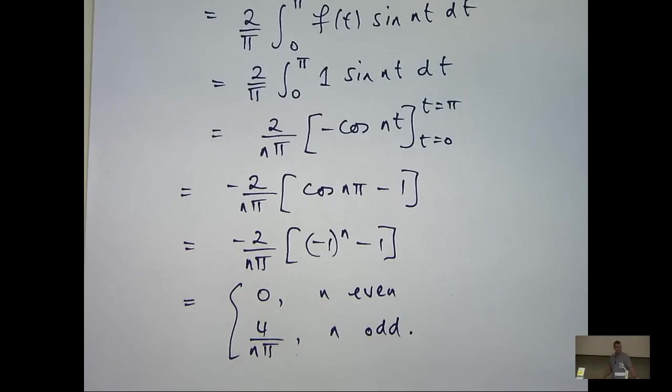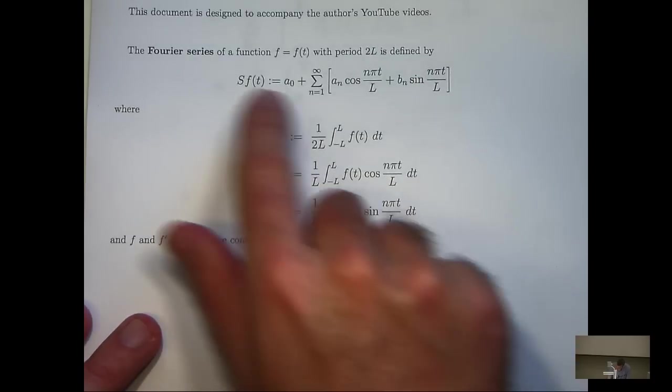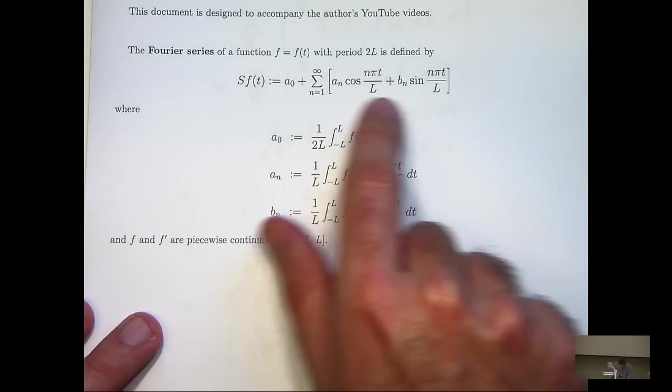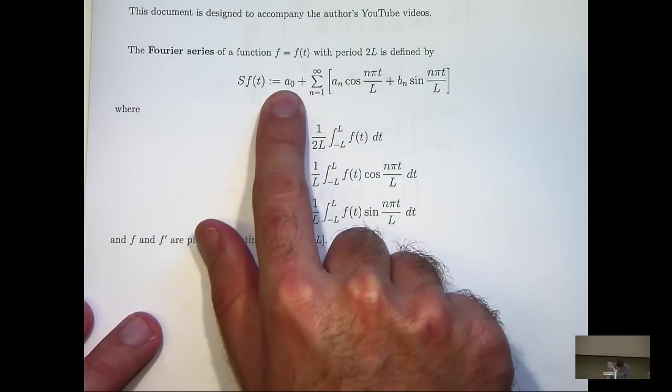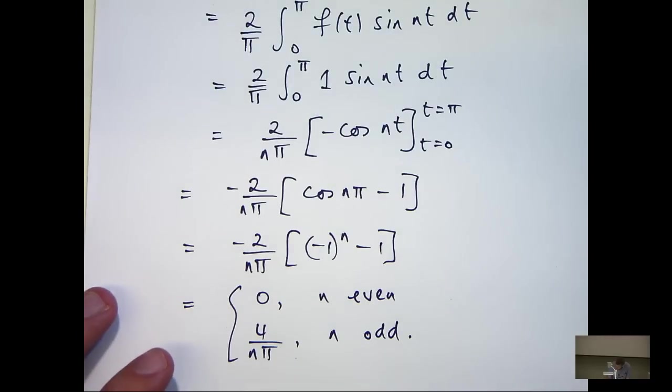So I've calculated my three Fourier coefficients. Two of them were 0 and bn is given down here. Okay, so now it's time to write out my Fourier series. If I go back and just write out this with L equals π and my a0s, my ans and my bns, well, that's going to be 0. That's going to be 0. And all I have to do is write out the following.